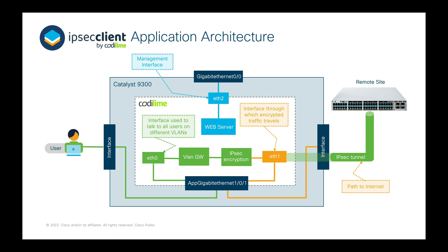To understand how IPsec Client by Kodi Lime functions, let's walk through the architectural design and connectivity. The application resides in a switch Docker container that includes everything needed to run the application. As this application is specifically supported on Catalyst 9300 series switches, it contains an AppGigEthernet interface, which is an internal hardware data port dedicated for application traffic. Inside the container is a virtual NIC with three virtual interfaces: ETH0 (where all VLANs from the local network terminate), ETH1 (where the IPsec tunnel starts from), and ETH2 (the management interface that goes through the GigabitEthernet 0/0 interface to manage the application).